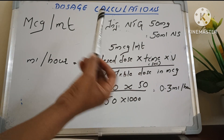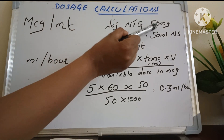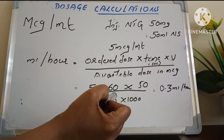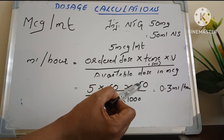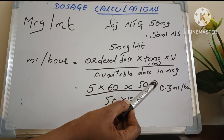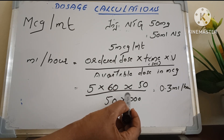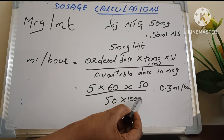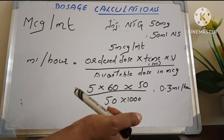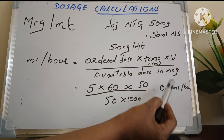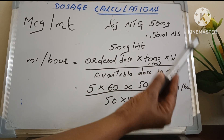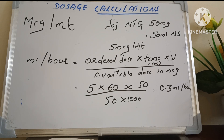What is the available dose? The available dose here is 50 mg. So 50 mg in microgram — to convert mg into microgram, multiply by 1000. So 50 into 1000. Therefore, 0.3 ml per hour has to be administered for the patient.